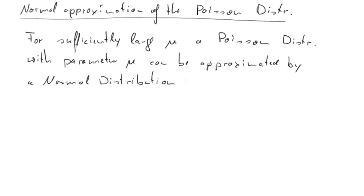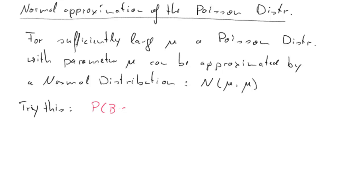We know a normal distribution has two parameters, so we have to be clear what they are. It turns out both parameters come from mu: the mean is mu and the variance is mu as well. So for our example, we have a normal distribution with mean 8 and variance 8. That was for a Poisson distribution with mu equals 8.